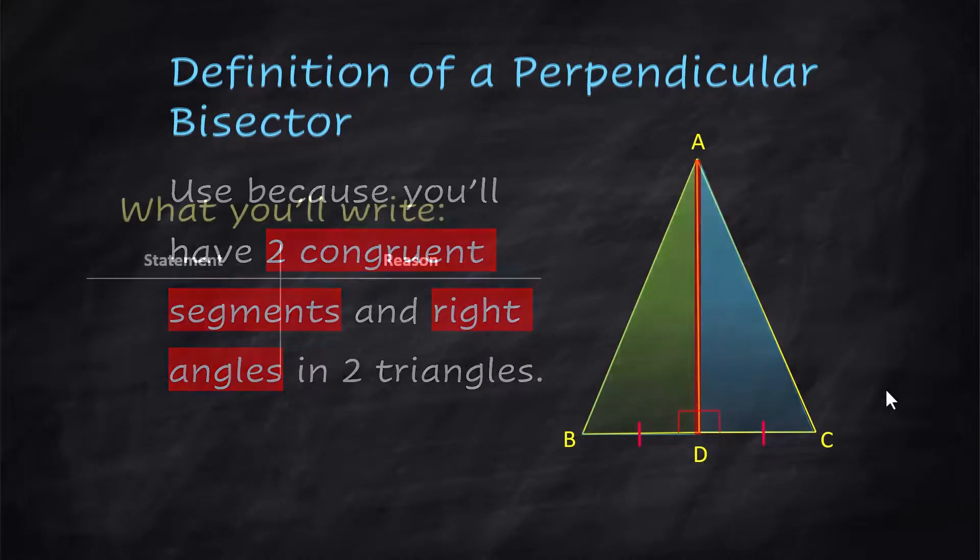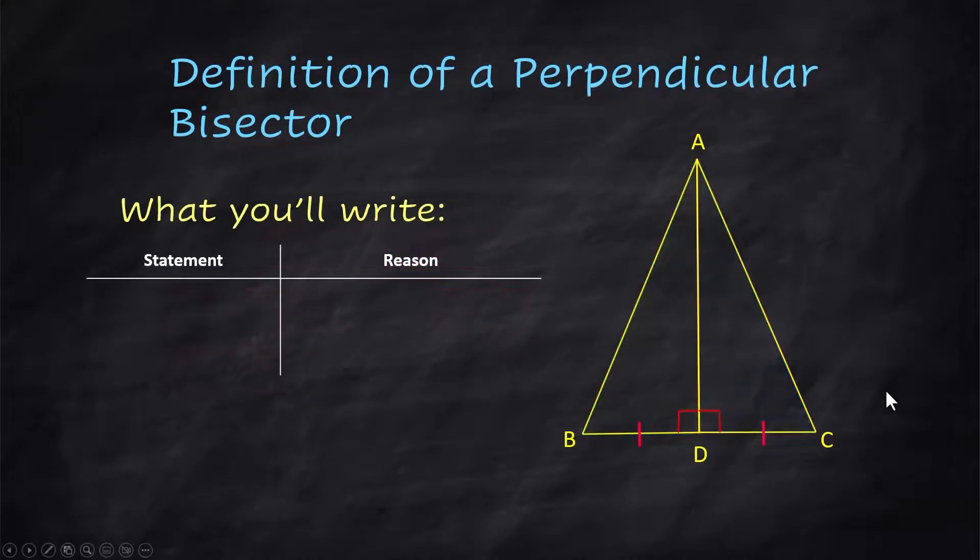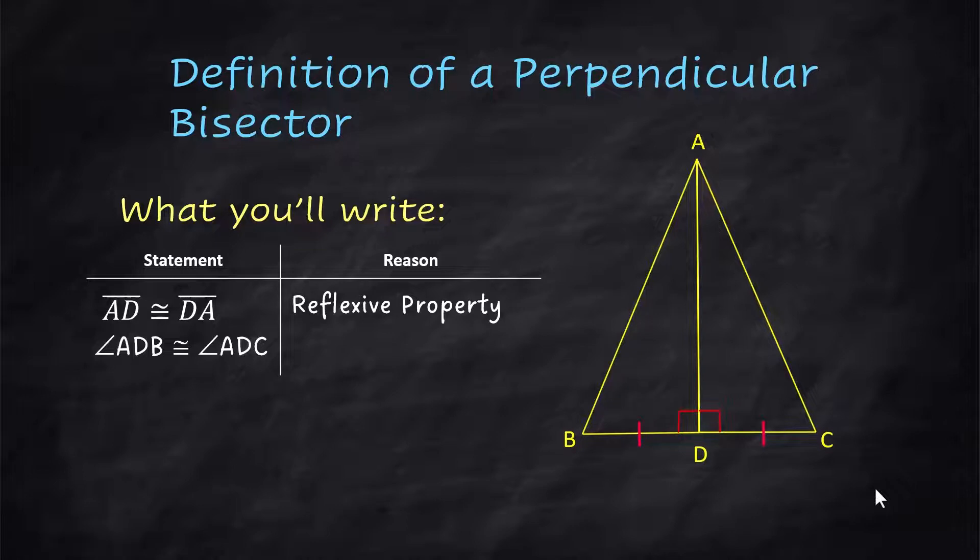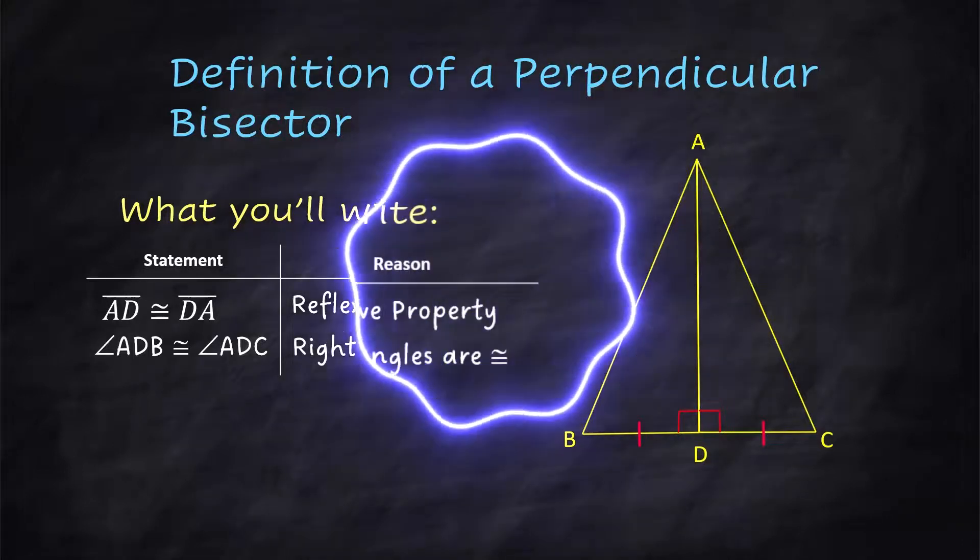So in the proof, now we're not doing the entire proof. We're just showing you how you would write about a perpendicular bisector. AD is congruent to DA and that would be the reflexive property. And angle ADB is congruent to angle ADC. Right angles are congruent.